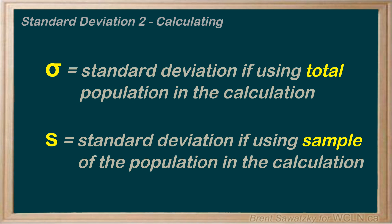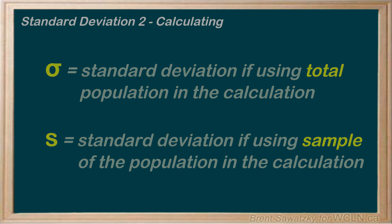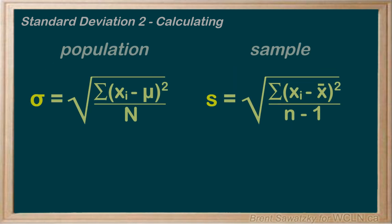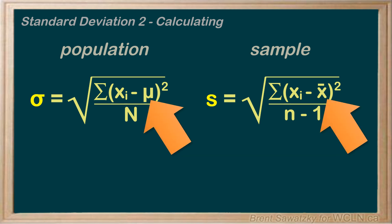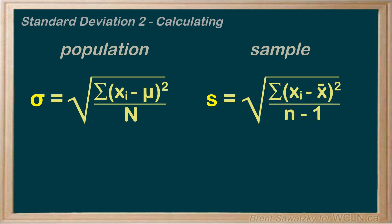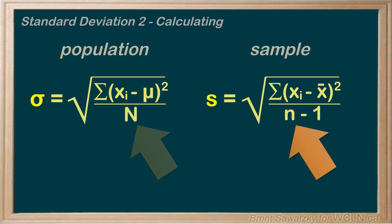You can help remember by thinking of s for sample. The formula you use to calculate the standard deviation also looks slightly different depending on your data. We use different symbols for the mean, and for the number of data points we use capital N for the whole population, but lowercase n for the number of data points in a sample.